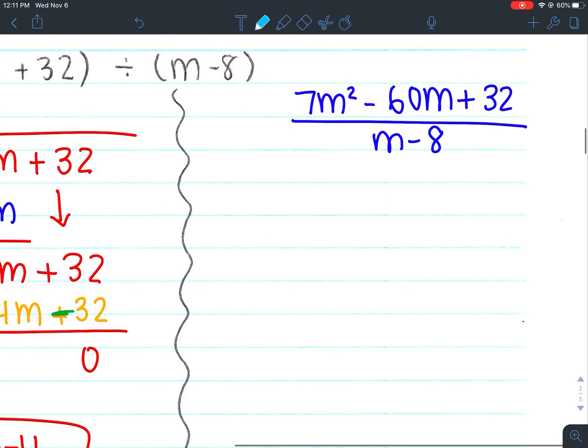So I'm going to go ahead and factor that trinomial in the numerator. So 7m² - 60m + 32. The first thing I do is I always check for a GCF, but I don't have one in this case. So I'm going to go ahead and start AC method.